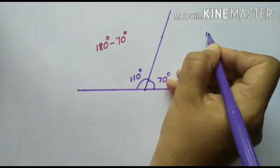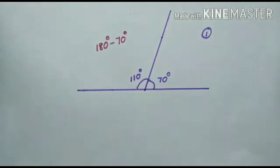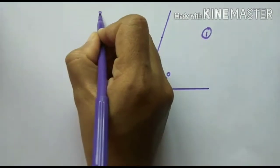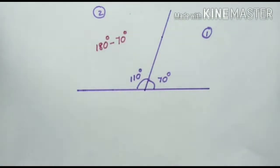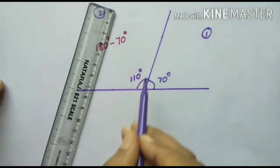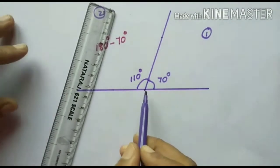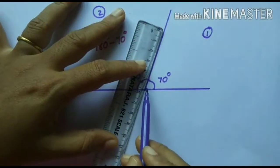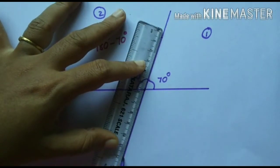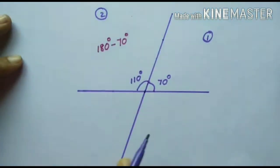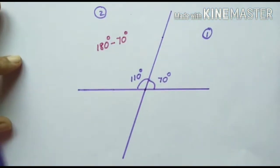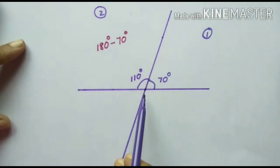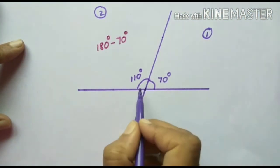Let this angle be angle 1 and this angle be angle 2. Now suppose I am extending this upper line downward like this.